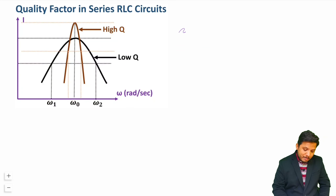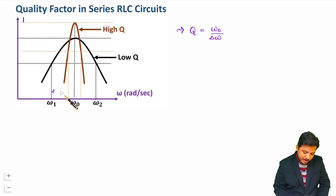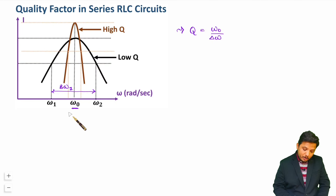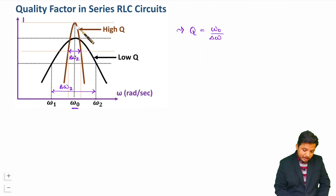So let us try to understand this by mathematical calculation. Quality factor is the center frequency — that is resonant frequency — divided by bandwidth, that is delta omega. If you observe, by the black color we have this much bandwidth — let us say this is bandwidth 1 — and the center frequency is omega 0. By the gray color we have this much amount of bandwidth — let us say bandwidth 2 — and the center frequency is the same.